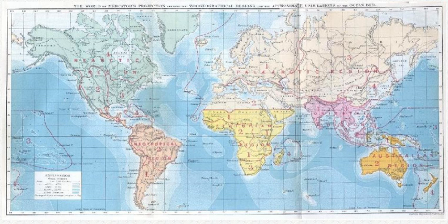Phytogeography is the branch of biogeography that studies the distribution of plants. Zoogeography is the branch that studies distribution of animals. Knowledge of spatial variation in the numbers and types of organisms is as vital to us today as it was to our early human ancestors, as we adapt to heterogeneous but geographically predictable environments.